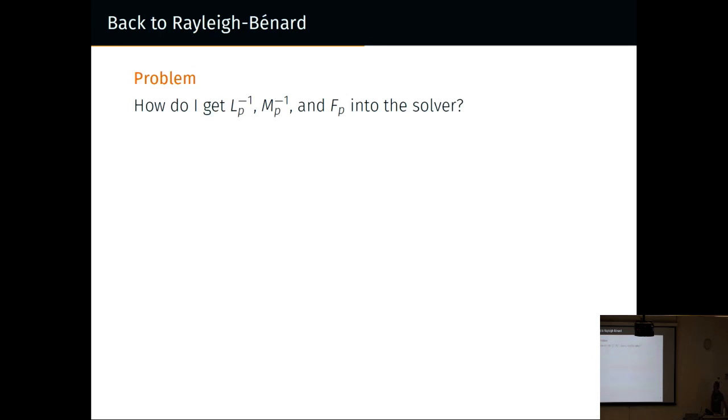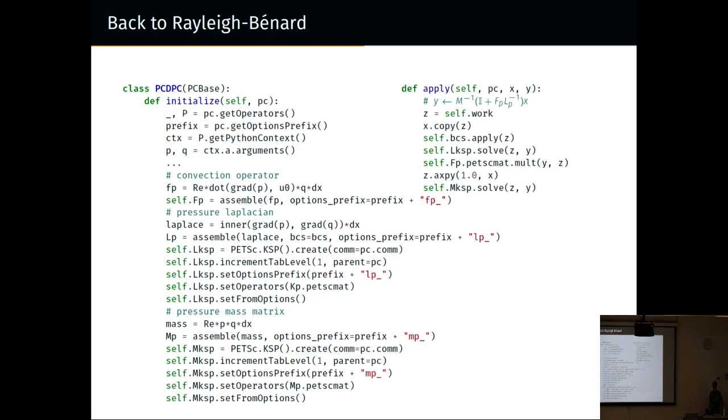Recall this problem: how did I get LP inverse, MP inverse, and FP into the solver? My solution, I write a custom preconditioner that makes them, that calls back to the PDE library. Because I do this in Firedrake, I can write it on a slide. I have a PCD PC, and in its setup, it gets the operators, pulls out the test and trial functions and the meshes, I build the convection operator and assemble it, I build the pressure Laplacian with boundary conditions and make KSPs to invert it, I build the pressure mass matrix similarly and make KSP to invert that, and then the application is a few lines.